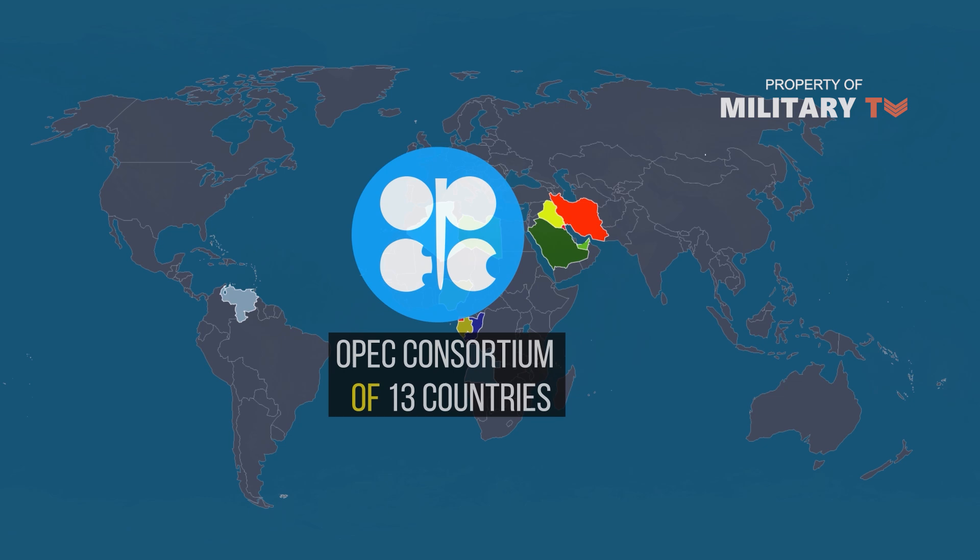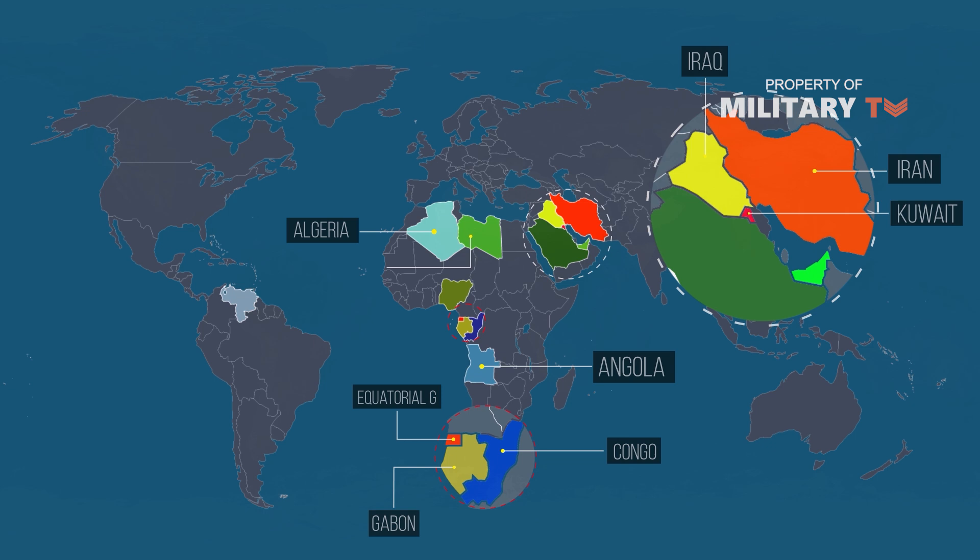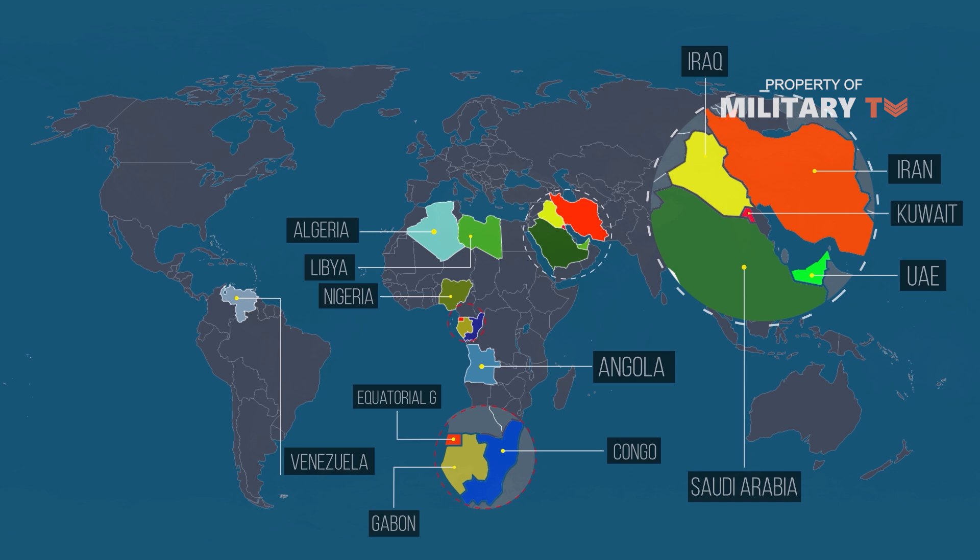OPEC is a consortium that, as of 2021, is made up of 13 countries: Algeria, Angola, Congo, Equatorial Guinea, Guinea, Gabon, Iran, Iraq, Kuwait, Libya, Nigeria, Saudi Arabia, UAE, and Venezuela.